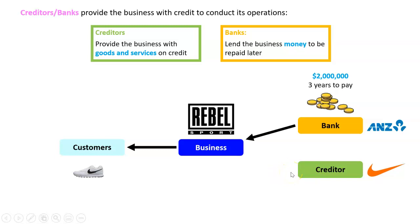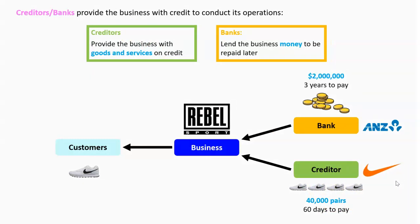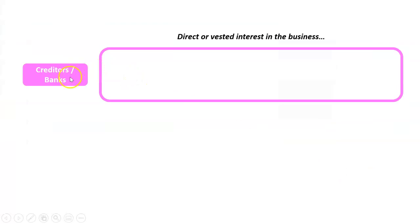However, in the business world, businesses often borrow from each other — but not money. In this case, we might go to Nike and say, 'I'd like to buy forty thousand pairs of shoes, but I haven't got the money today — can you sell them to me and I'll pay you back later?' That's a perfectly normal thing in business, and we call the person that sells to our business on credit a creditor. In this case, that could be Nike.